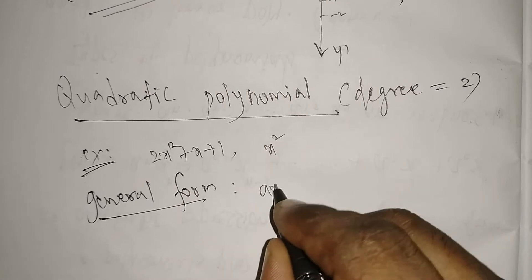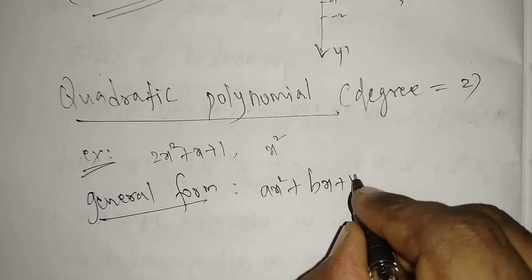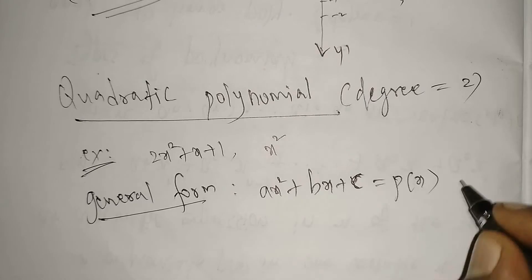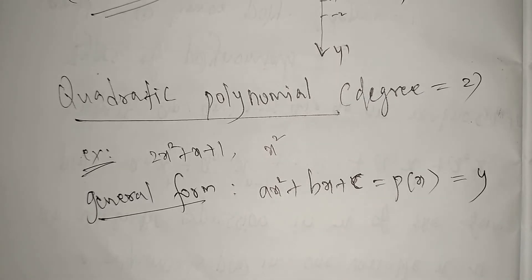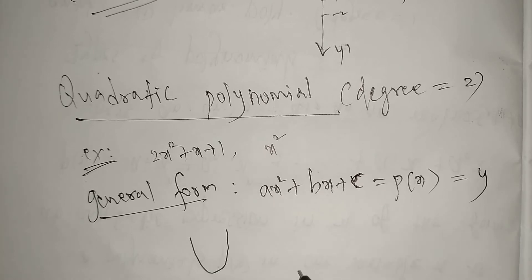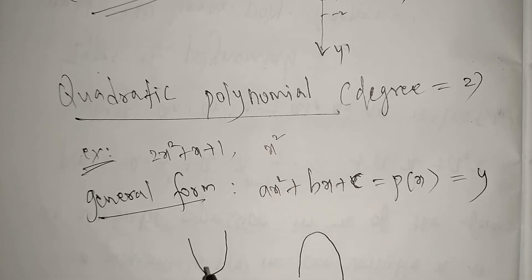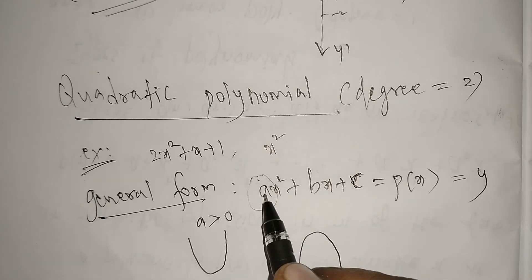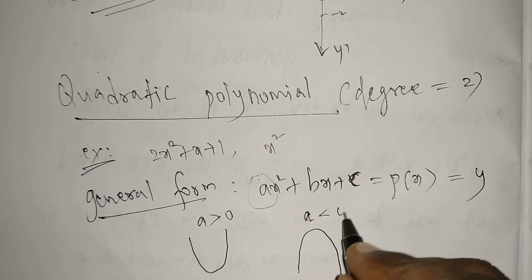The general form ax² + bx + c equals p(x), and p(x) equals y. If you go for a graphical way, you may get two types of curve: one upward curve and another downward curve. For an upward curve, the coefficient of x², that is 'a', must be greater than zero.